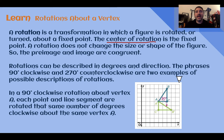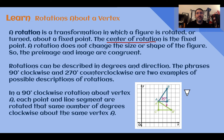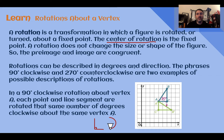Rotations are described in degrees and direction. So phrases like 90 degrees clockwise or 270 degrees counterclockwise are examples of the types of descriptions you might see. If we had a 90 degree clockwise rotation, each point and segment on the shape would be rotated 90 degrees, making a right angle in the clockwise direction. Think about an older analog clock where the hands move clockwise — going down to the right then back up. So 90 degrees makes a quarter of a turn downward to the right.